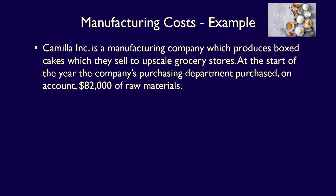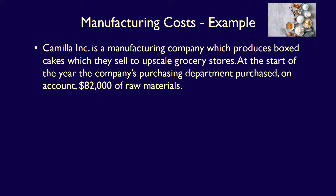Camilla Inc. is a manufacturer producing custom boxed cakes which they sell to upscale grocery stores. At the start of the year, Camilla purchased $82,000 of raw materials on account. To simplify the concepts, let's assume that Camilla is a new company and therefore there are no opening balances in any of their accounts. The entry to record the purchase would be to debit raw material inventory and credit accounts payable for $82,000.